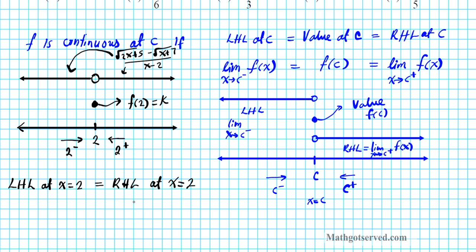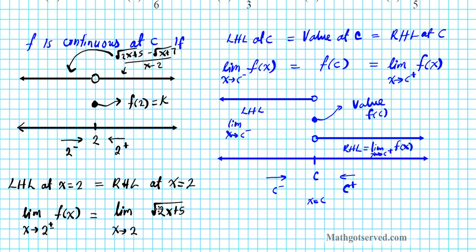So the left-hand limit at x equals 2 equals the right-hand limit at x equals 2. We can write this as a combined double-sided limit: the limit as x approaches 2 of the square root of (2x + 5) minus the square root of (x + 7), divided by (x − 2). We have to find what this limit is, set it equal to k, and that will be our solution.